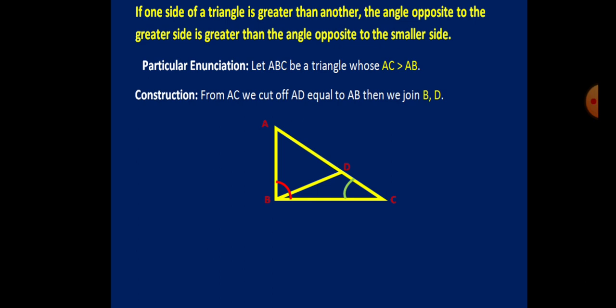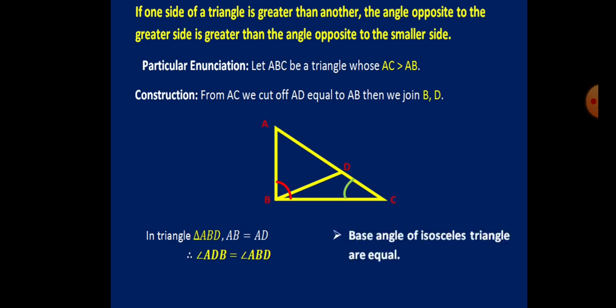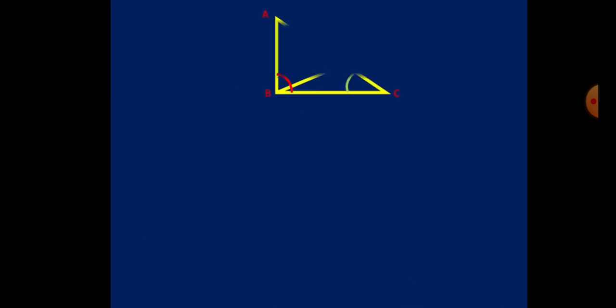The side AC is greater than side AB. In the construction part, we have cut off the smaller side AB from the bigger side AC, making AB and AD equal. When two sides of a triangle are equal, we call it an isosceles triangle. So triangle ABD is an isosceles triangle, and hence angle ABD equals angle ADB, as they are base angles — and base angles of an isosceles triangle are always equal.